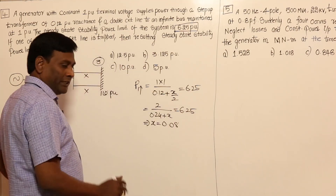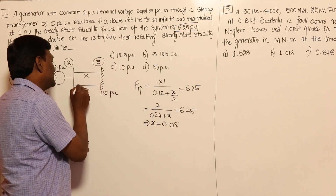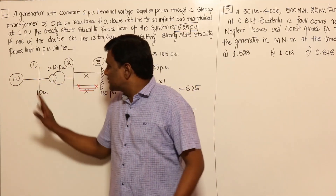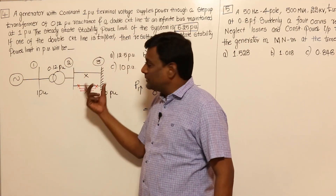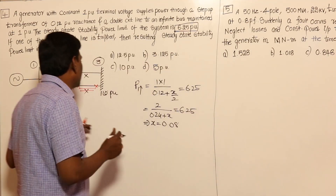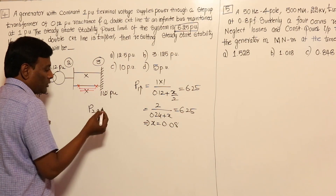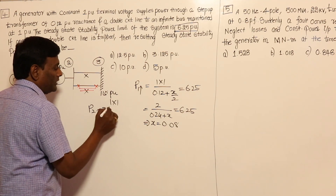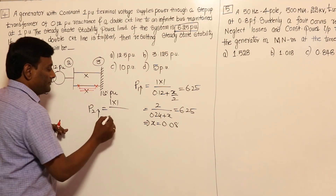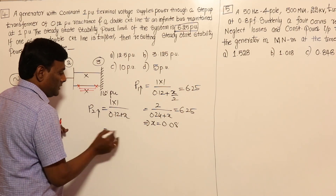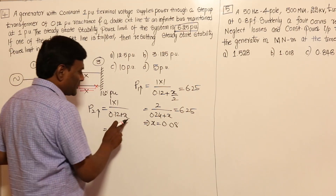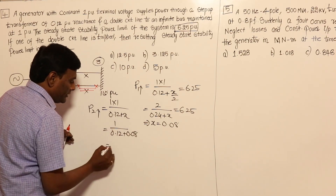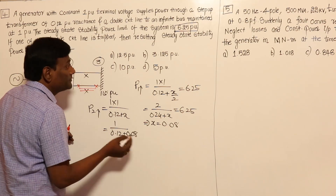Now, if one circuit is tripped, that line is completely removed. Under that condition, the reactance from sending end to receiving end is 0.12 + X only. So P2_max = 1×1 / (0.12 + 0.08) = 1 / 0.20 = 5 per unit.